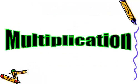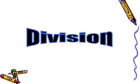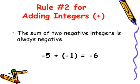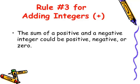Addition, subtraction, multiplication, and division. Rule number one for adding integers: the sum of two positive integers is always positive. Suppose 5 plus 1 equals 6. Rule number two for adding integers: the sum of two negative numbers is always negative. For example, minus 5 plus minus 1 equals minus 6.